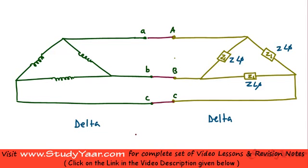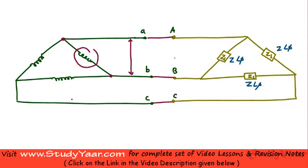I have a delta-delta connection which I would like to analyze for line and phase quantities. What is your line voltage? Your line voltage is the voltage across your transmission lines, which is the same as the voltage between two points — essentially the voltage in your coil. Let's say my coil voltage is Vm angle 0, my coil voltage in this particular coil is Vm angle minus 120.